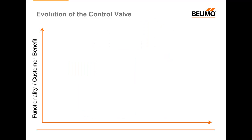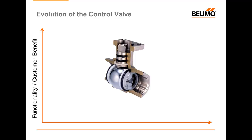Let's begin with a small discussion of the evolution of the control valve. A traditional-style control valve is what is known as a position control valve, and this means that the control signal directly controls how open or closed the valve is. What is shown here is a Bilemo characterized control valve, but we could also have shown you a globe valve or any other type of traditional control valve. These valves are more or less open depending on the movement of the valve stem — this is the only thing that the controller controls.